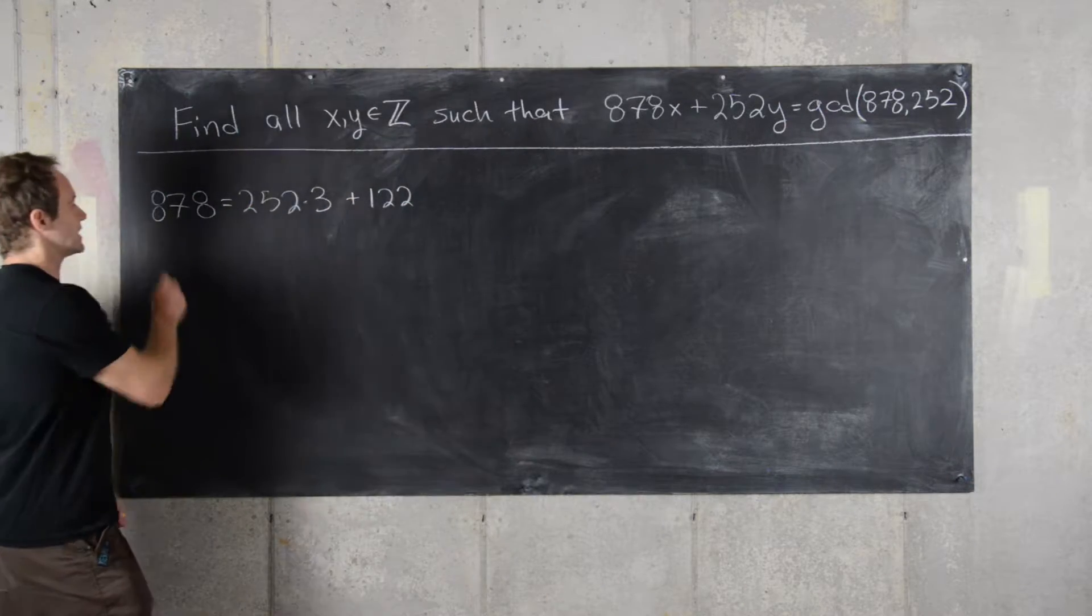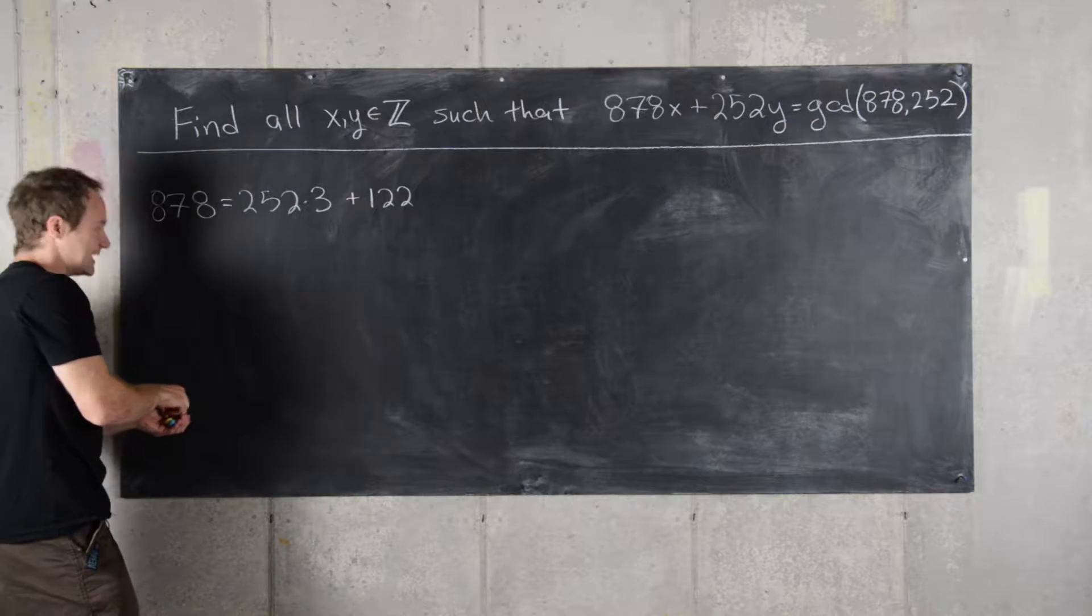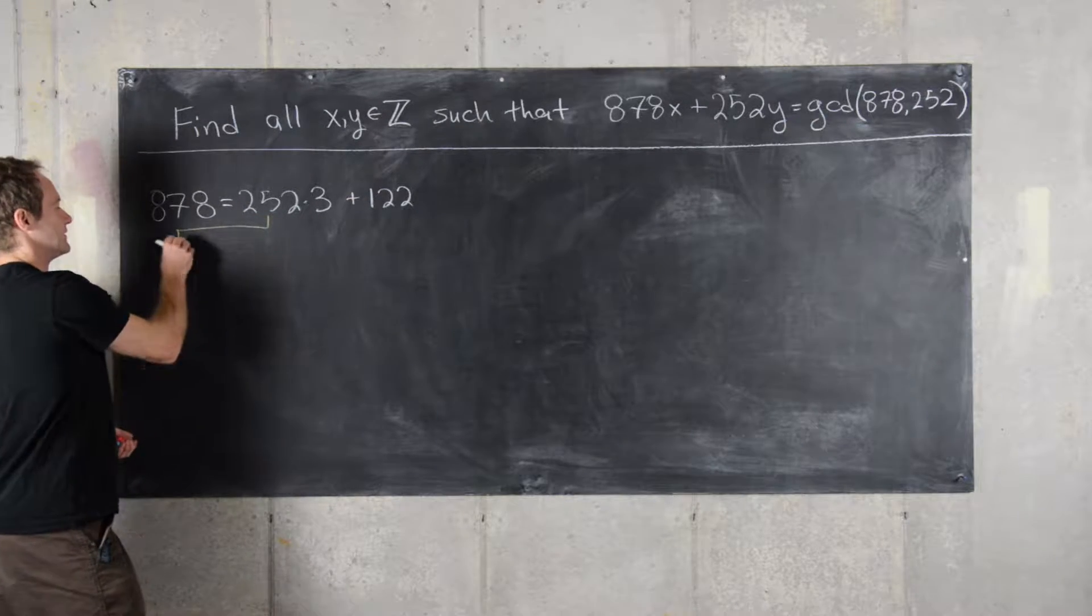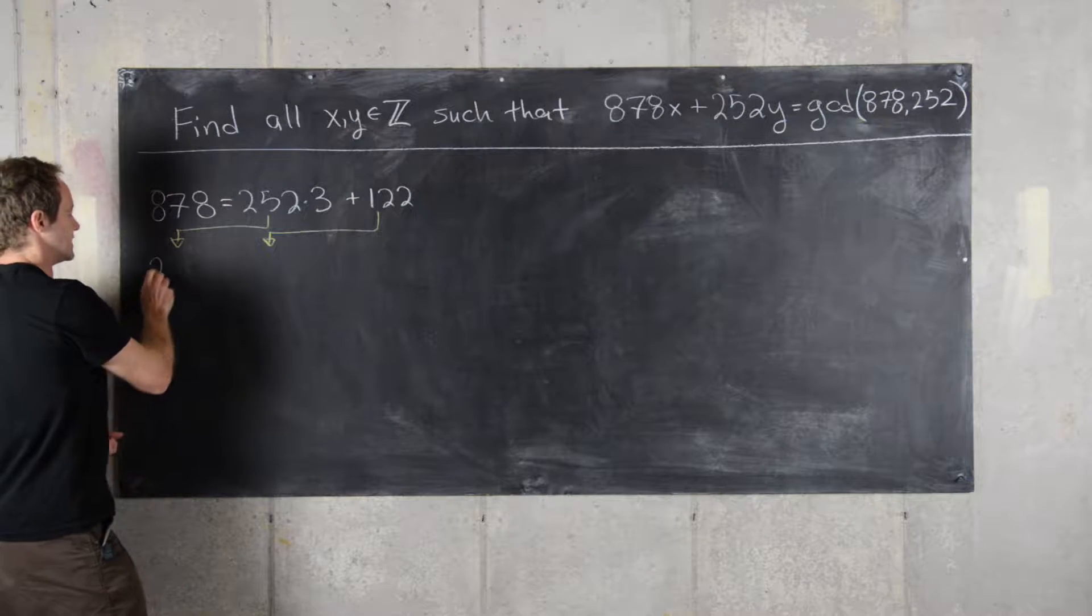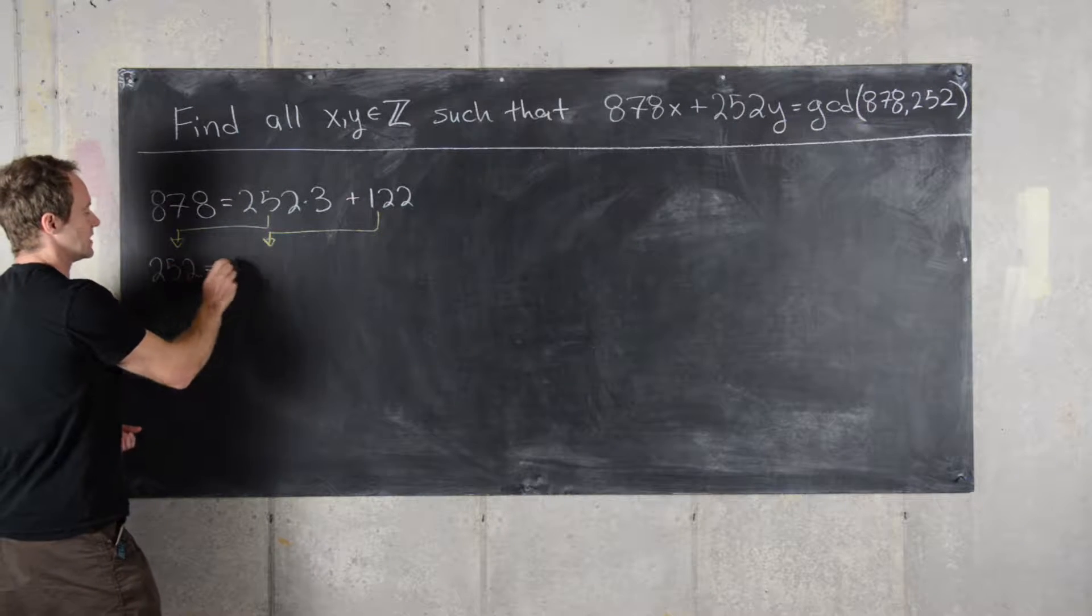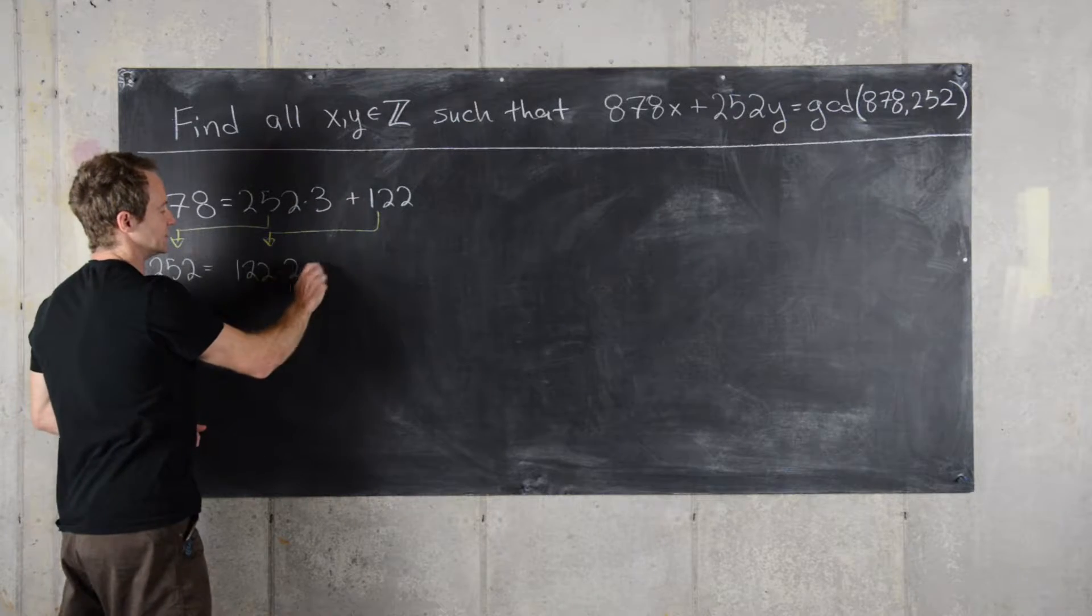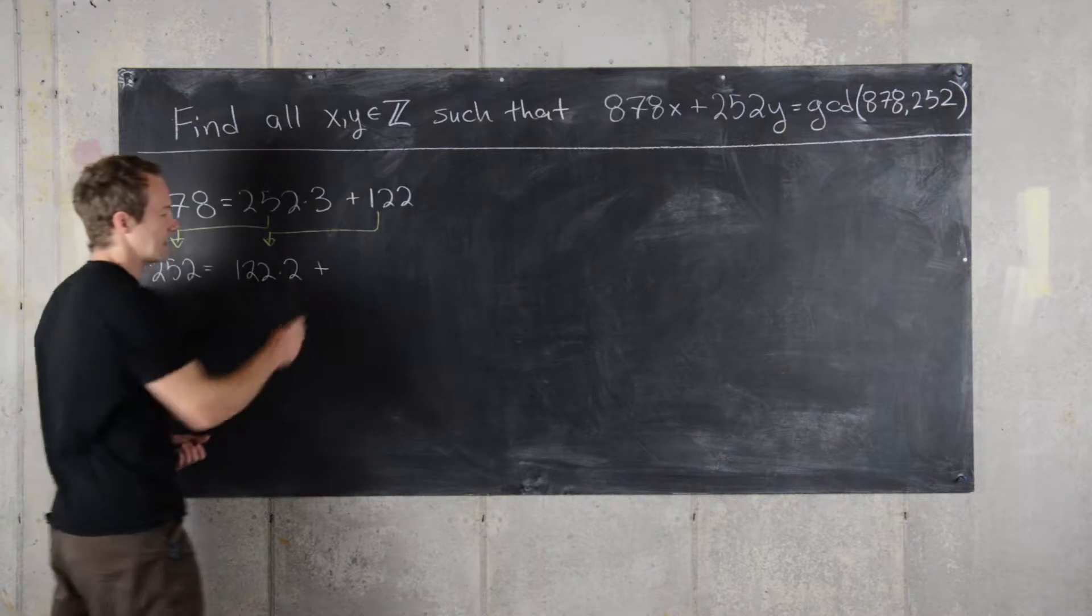Next, the next step is to bring down 252 and 122. We can write 252 as 122 times 2 plus 8.